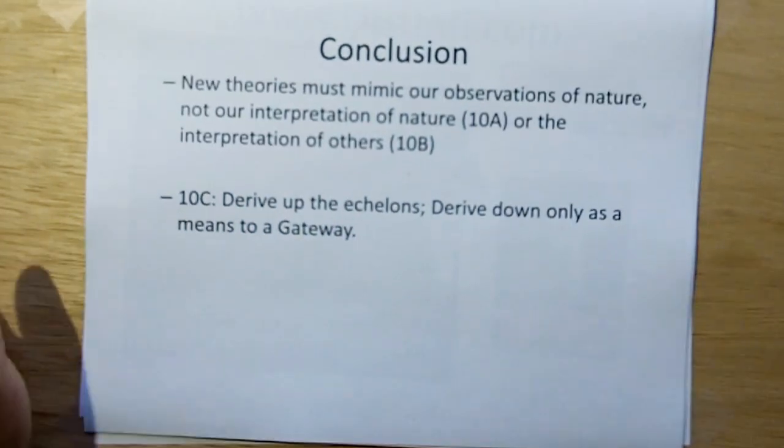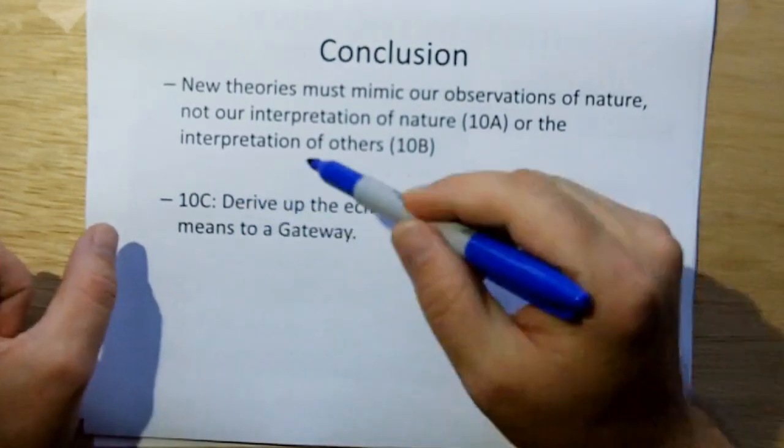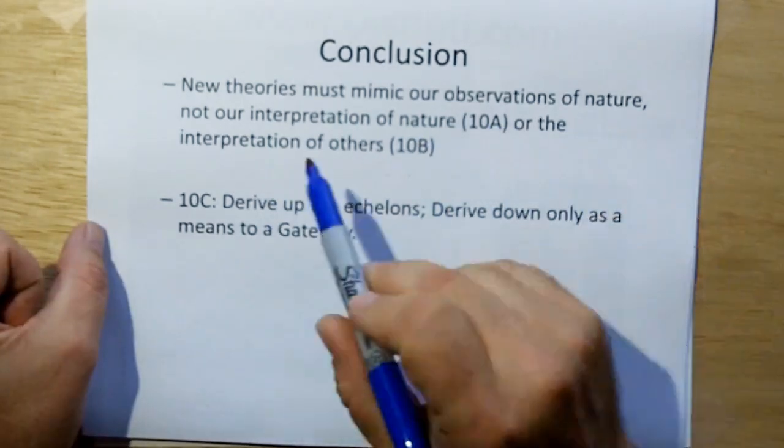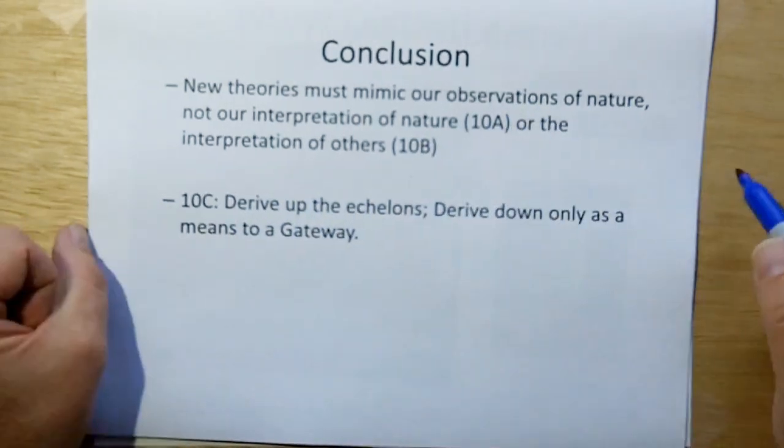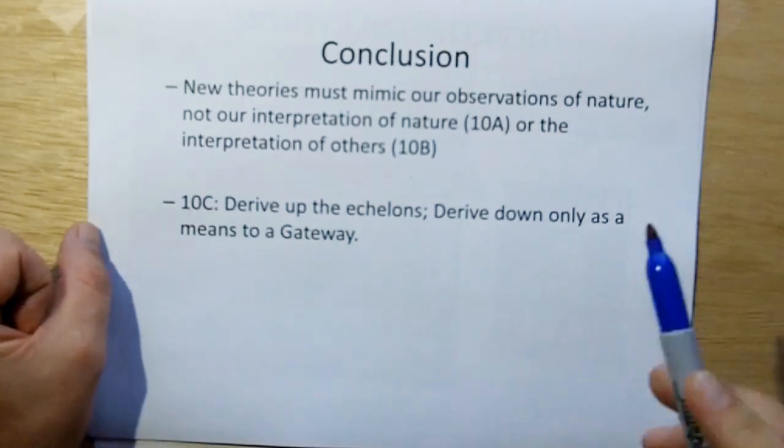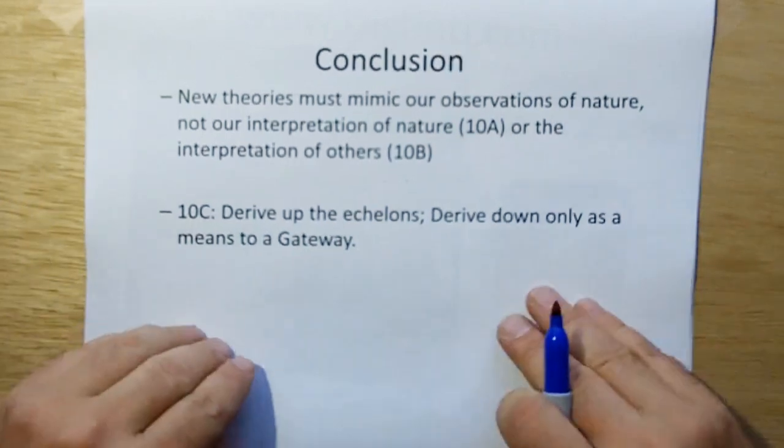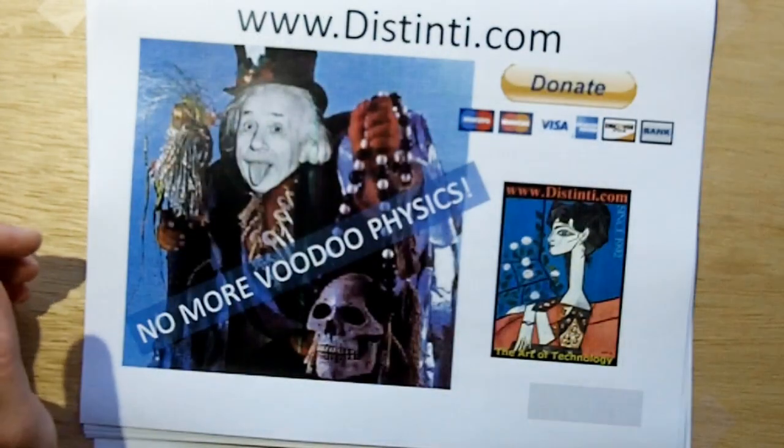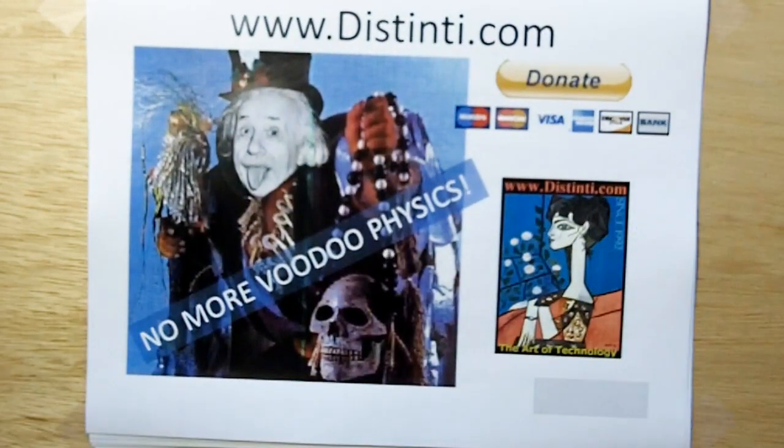So the conclusion. New theories must mimic our observations of nature, not our interpretations of nature or the interpretations of others. That's 10a and 10b. And derive up the echelons, derive down only as a means to a gateway or a guess. Thank you. No more voodoo physics. If you would like to make a contribution, I'd really appreciate it. Thank you very much.